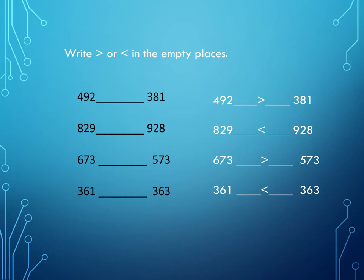Then we have 829 and 928, and 928 is the bigger number, so the crocodile will open his mouth towards 928. Next we have 673 and 573, and 673 is bigger than 573, so the crocodile mouth will open towards 673. At the last we have 361 and 363, and the number 363 is bigger than 361, so the crocodile will open his mouth towards 363.